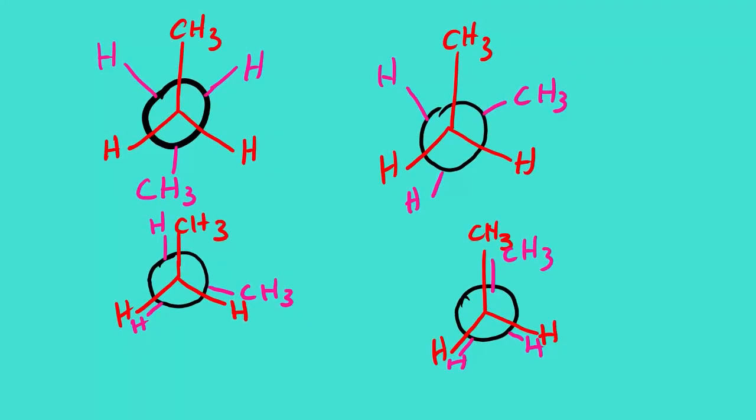Now between the four, which one is most stable and which one is least stable? We look at the angles. 180 degrees, which is anti-conformation, is the most stable since it has the least or lowest energy.